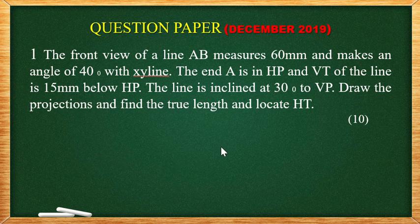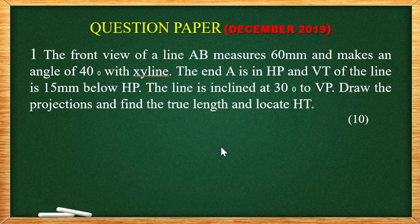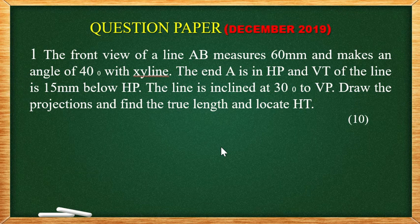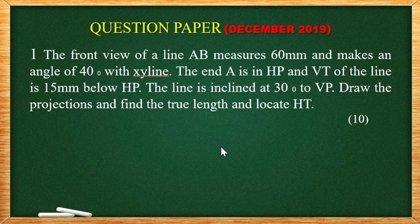The front view of a line AB measures 60 mm and makes an angle of 40 degree with XY line. The end A is in HP and VT of the line is 15 mm below HP. The line is inclined at 30 degree to VP. Draw the projections and find the true length and locate horizontal trace.